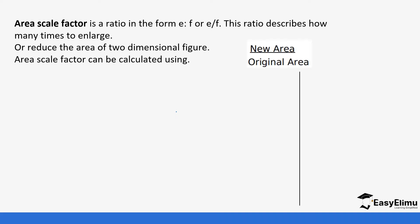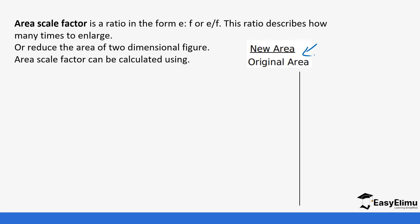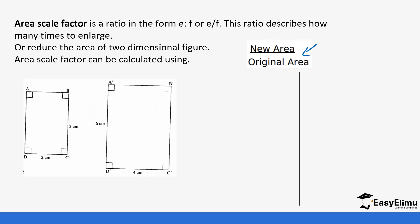Area scale factor can be calculated by getting the new area — that is the image — over the original area. Take note of this, just like we were looking at the linear scale factor. For example, if we have an object and an image: rectangle ABCD and rectangle A'B'C'D'. You notice A'B'C'D' is an image of ABCD. So if you want to find the area scale factor, remember it's the new area over the original area.